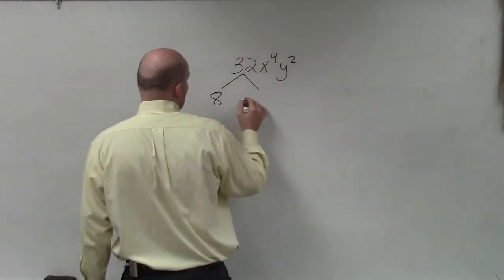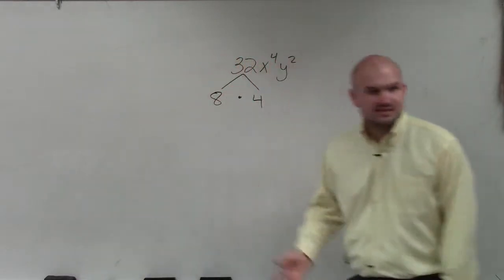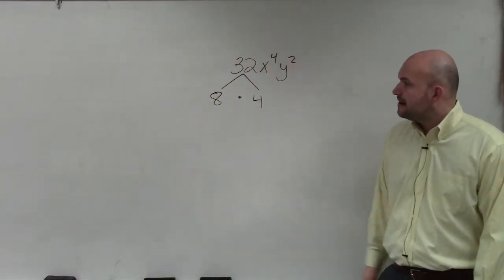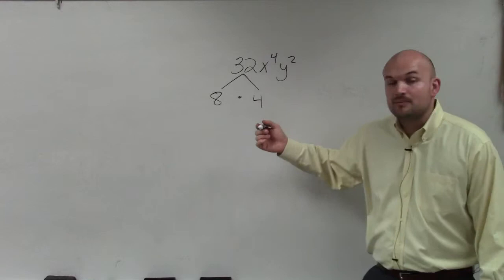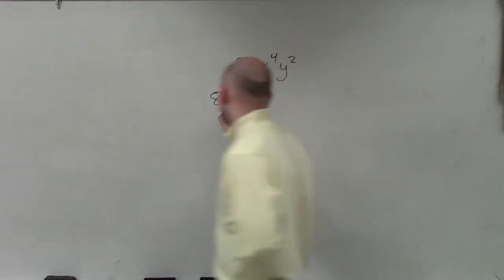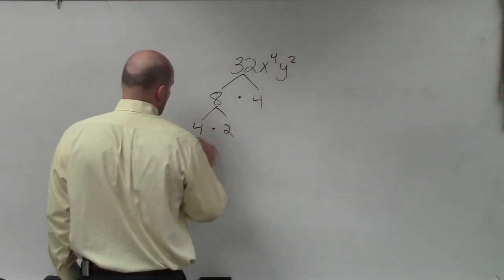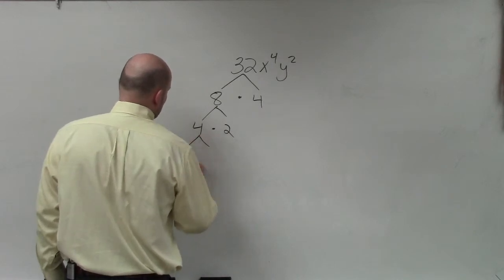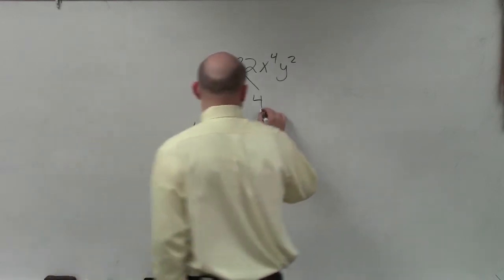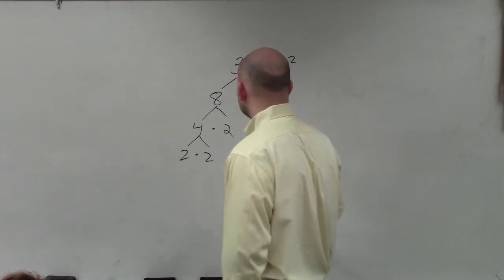So I decided to choose 8 times 4. If you did 16 times 2, you'd still get the same answer. Then each of these factors, we keep on breaking them down until we get to prime numbers. So 8, I can break down into 4 times 2. And 4, I can break down into 2 times 2. And this 4, I can also break down into 2 times 2.